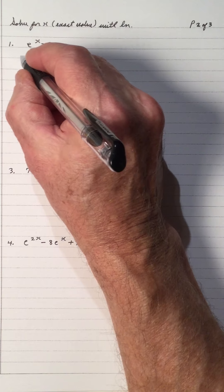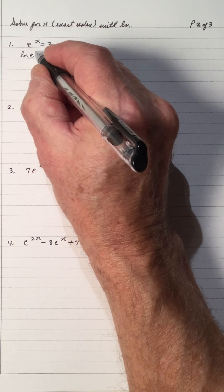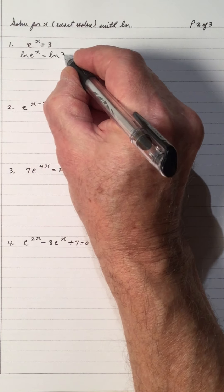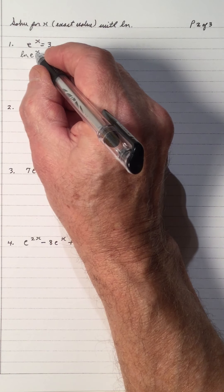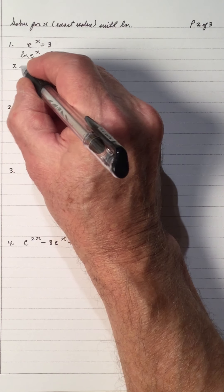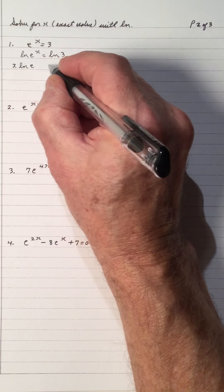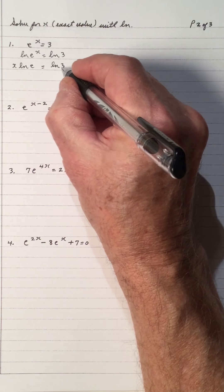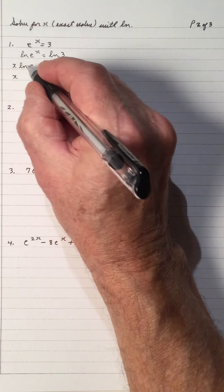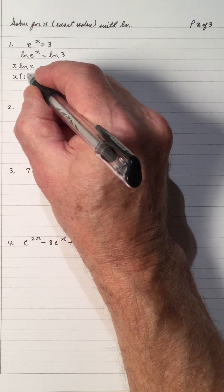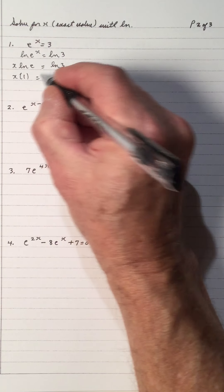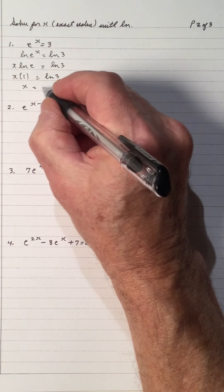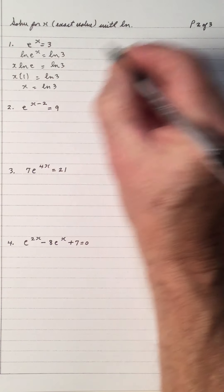Since x is in the exponent, the ln of e to the x equals the ln of 3. Because of the power rule, x moves to the front of the ln. And the ln of e is 1. So, x equals ln 3.